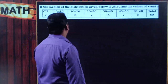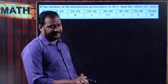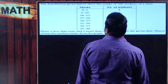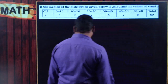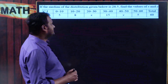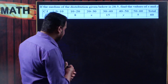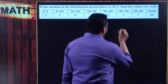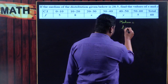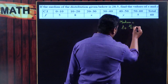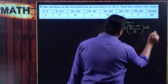Let us move on to the next problem. If the median of the distribution given below is 28.5, find the values of x and y. The median formula is: Median = L + [(n/2 − Cf) / f] × h.